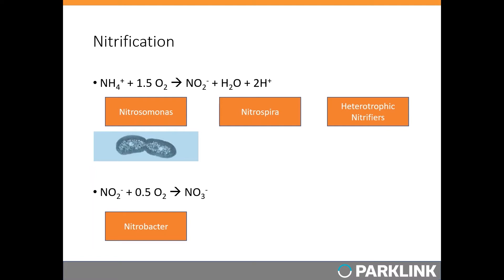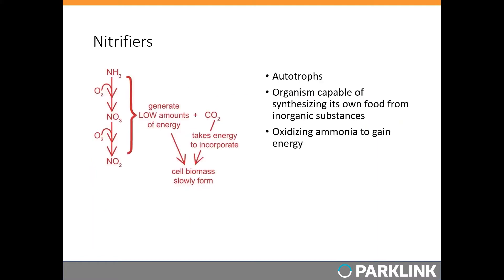The next step — the oxidation of nitrite to nitrate — is primarily done through Nitrobacter. Nitrifiers use this oxidation process to generate energy, but it doesn't generate anywhere near as much energy as heterotrophs get from oxidizing glucose. Because ammonia and nitrate oxidizers are autotrophs, they have to use inorganic carbon from the environment to make their own organic carbon for energy — similar to how plants and algae function.